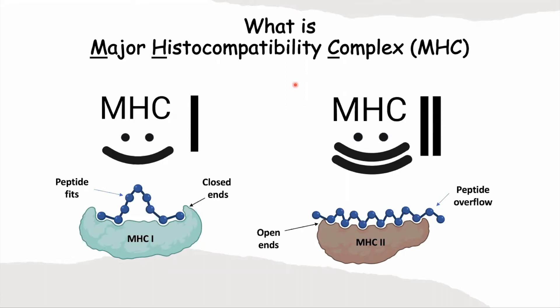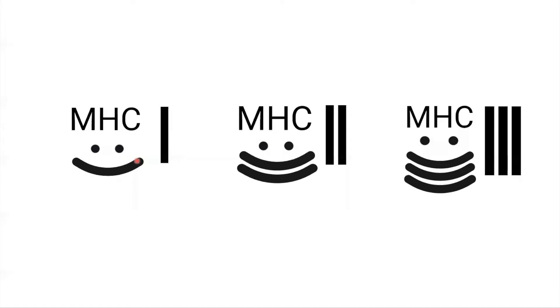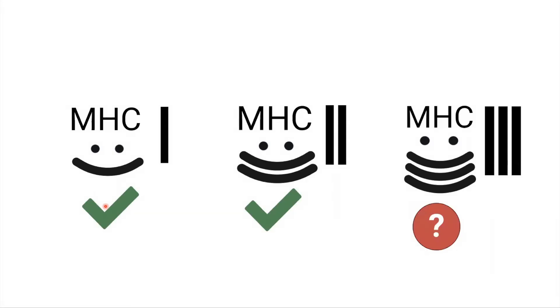Generally, MHC molecules are like billboards. They work to inform the T-cells about what is happening inside the cell — infection, disease, or damage. There are three types of major histocompatibility molecules: MHC1, MHC2, and MHC3. MHC1 and MHC2 are the most well-studied in T-cell activation, while MHC3 is still not very much studied.